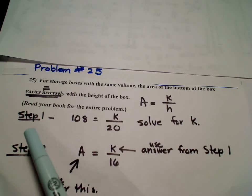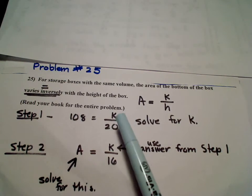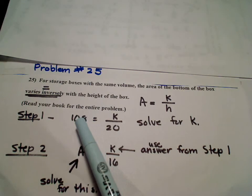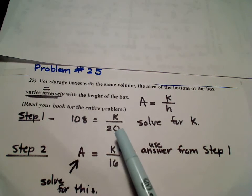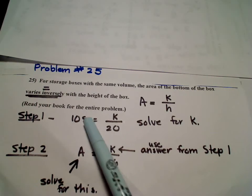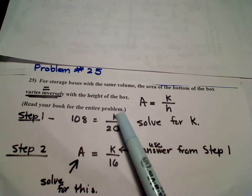Step number 1 is, like the previous problems, you're always looking for K first. So they would have to give you the area, which they did, and they would have to also then give you the height. When you get through solving for K from step 1, you go back again.